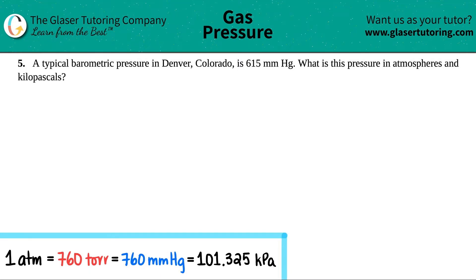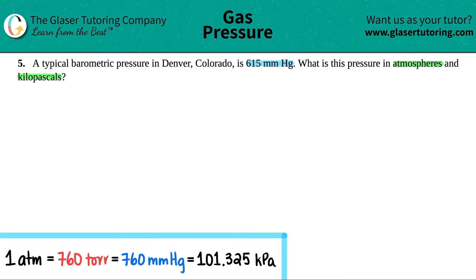Number five: a typical barometric pressure in Denver, Colorado is 615 millimeters of mercury. What is this pressure in atmospheres and kilopascals? They basically gave us a pressure reading out in Denver, Colorado.